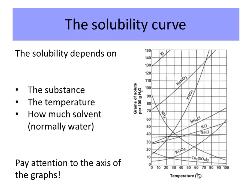This graph only goes from 0°C to 100°C because water boils at 100°C and freezes at 0°C. We're specifically talking about liquid water — this graph refers to 100 grams of water. So the amount of solvent present also matters.